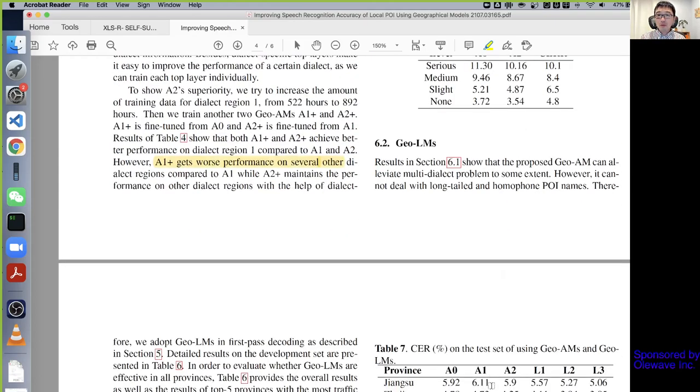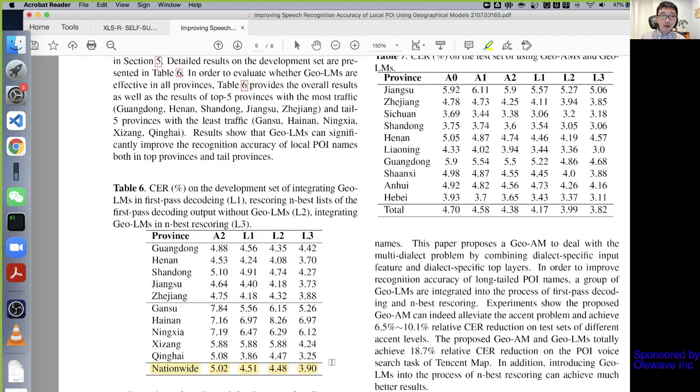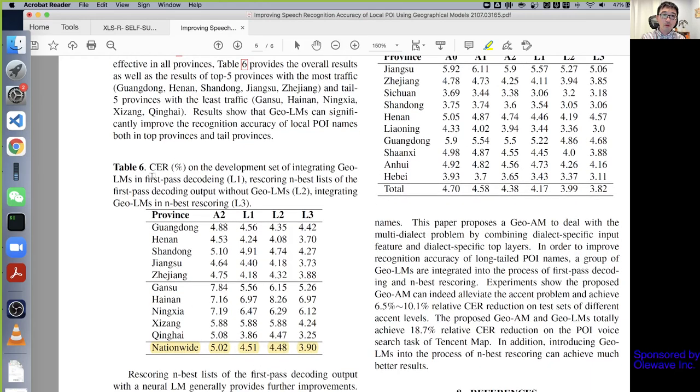For the geo language model, I would say there's not much exciting things going on except that the Table 6 results look really good. The results of this paper are really really good. You can see on the A2 system with the baseline language model using the first pass decoding, it's already getting better.